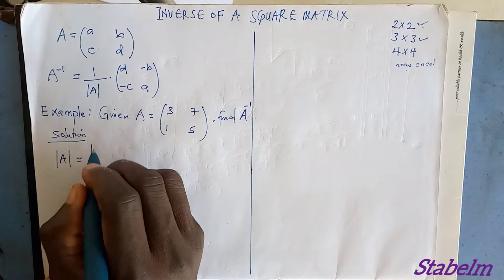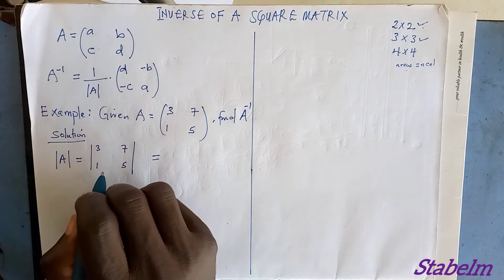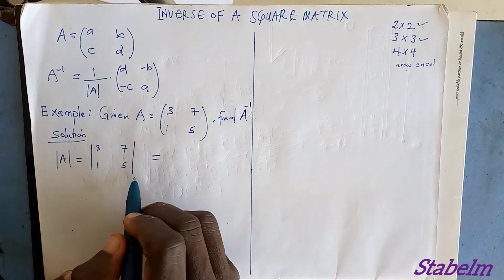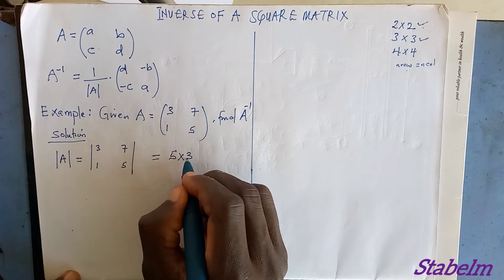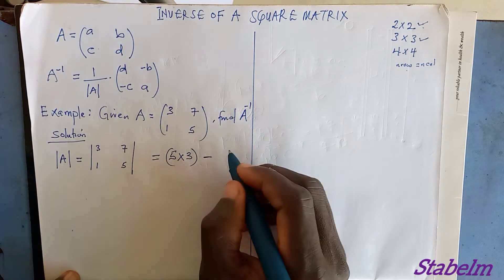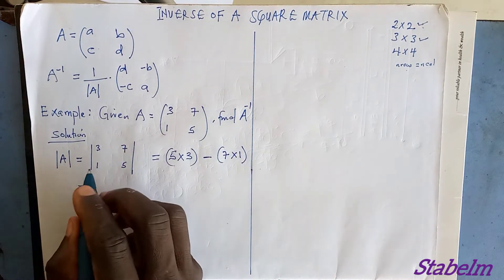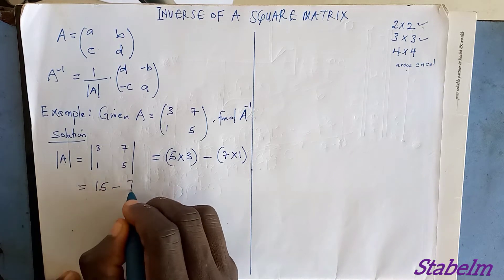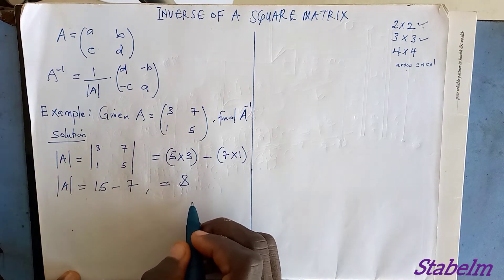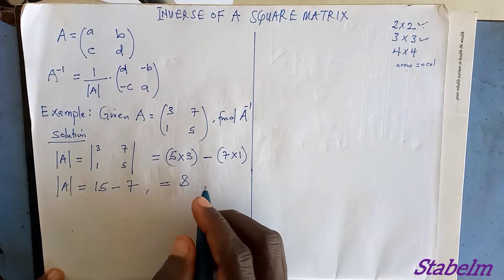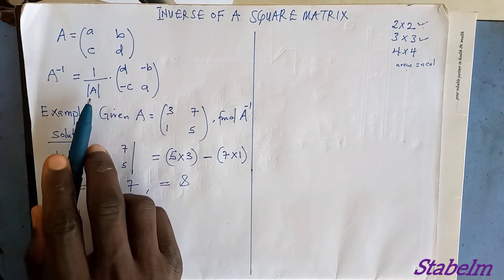The determinant of A equals [3, 7; 1, 5]. We calculate it as: 3×5 minus 7×1, which gives us 15 minus 7. So the determinant of A equals 8.